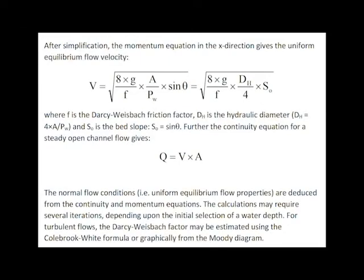After simplification, the momentum equation in the x-direction gives the uniform equilibrium flow velocity, or normal flow velocity, in which f is the Darcy-Weisbach friction factor. This equation is, of course, combined with the continuity equation.